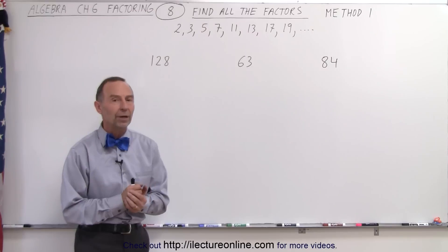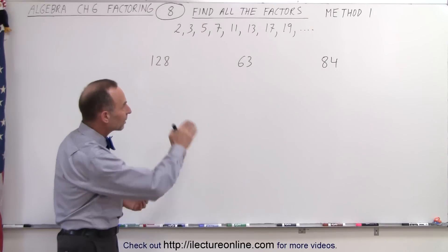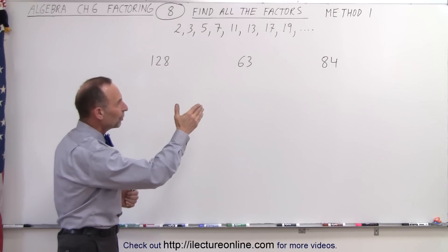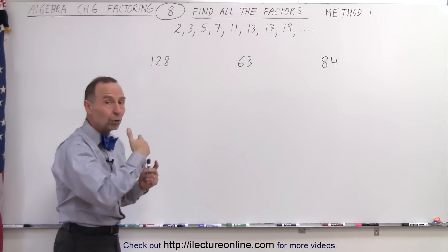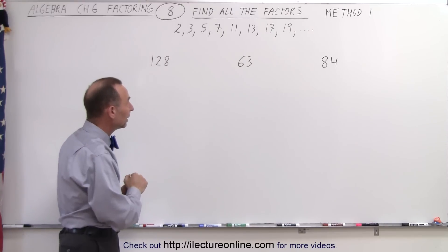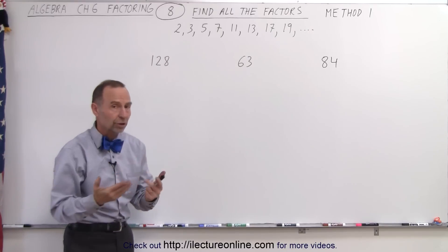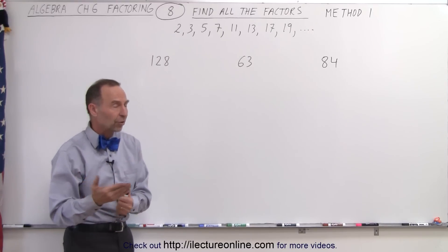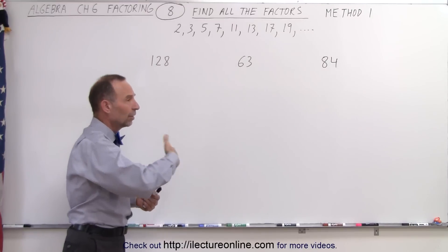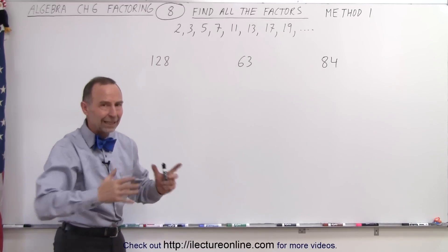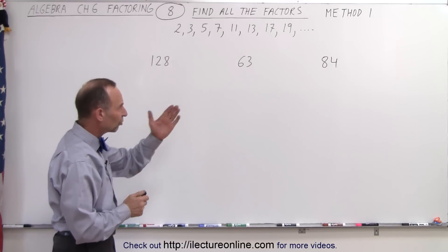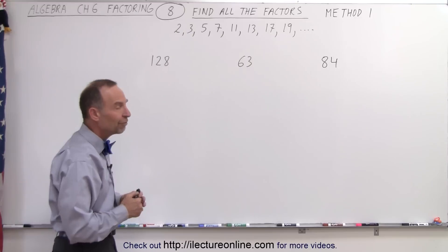Here's method number one, where we take the prime numbers and we see if the number in question is divisible by the smallest prime number. If it's no longer divisible by the smallest one, we try the next one, and the next one, and the next one, until we've completely broken it down into all its factors. So let's start with the number 84.